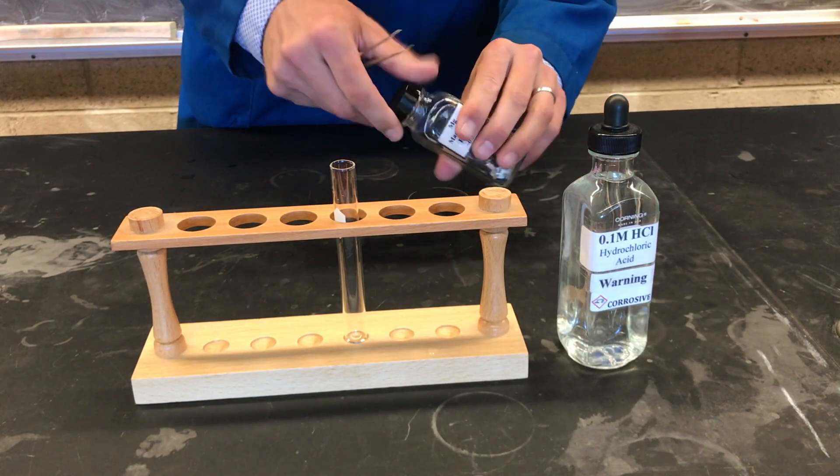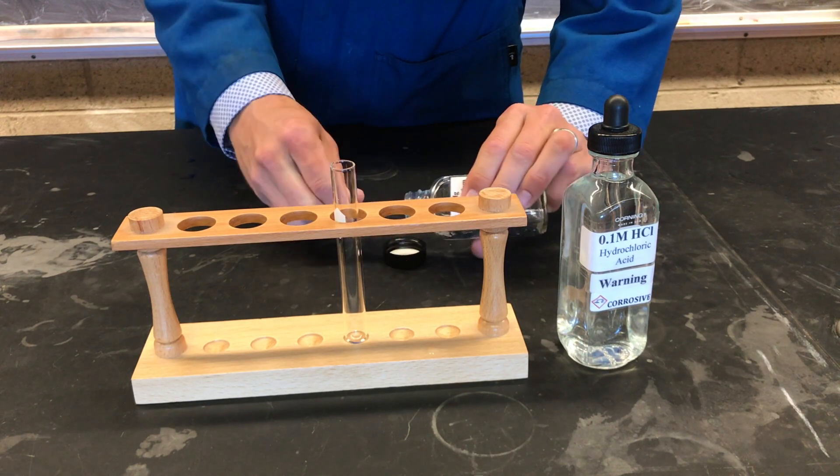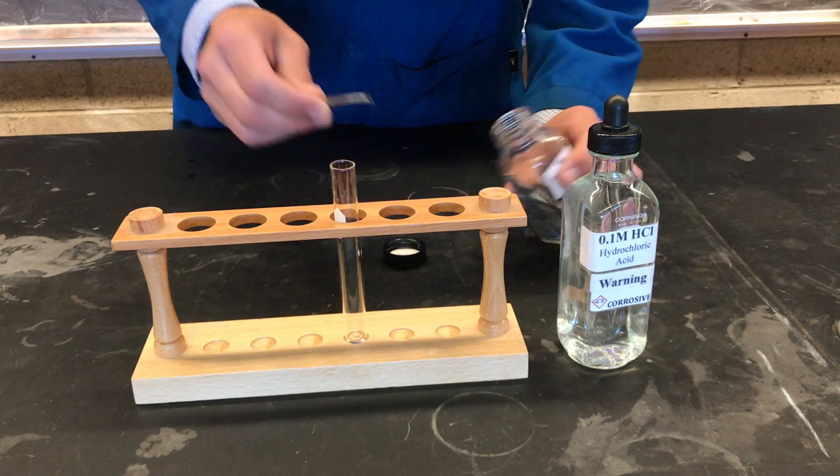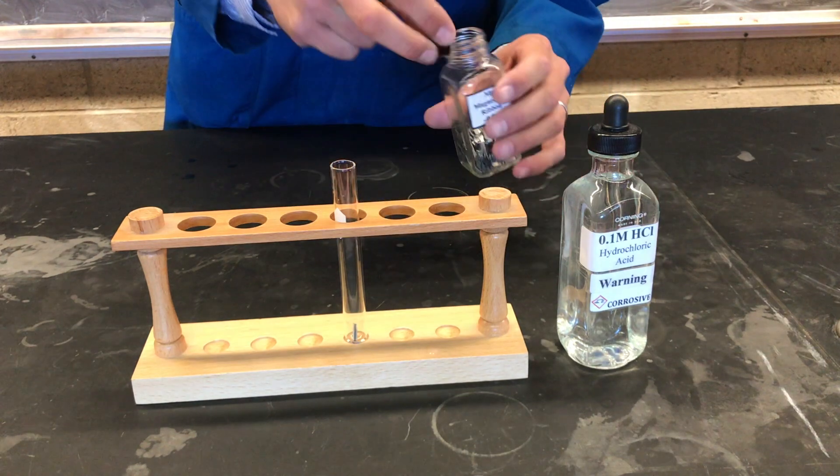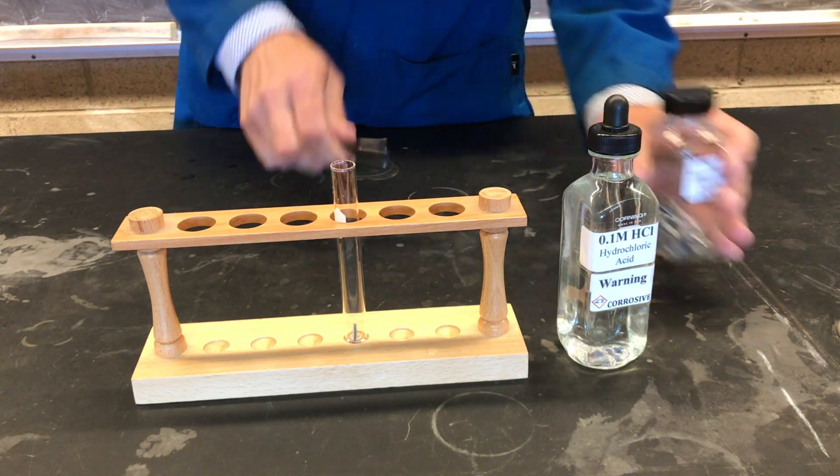Next, we're going to take a piece of solid magnesium metal, such as this one, and add it to a clean test tube and react it with aqueous hydrochloric acid.